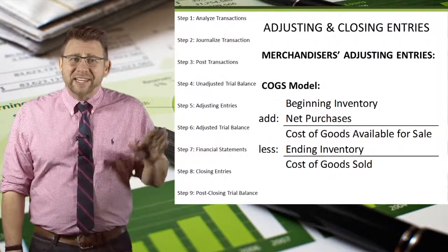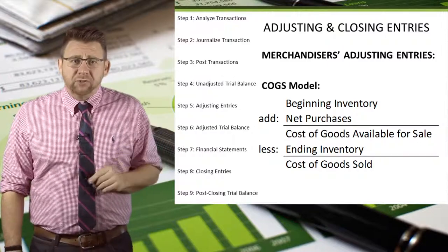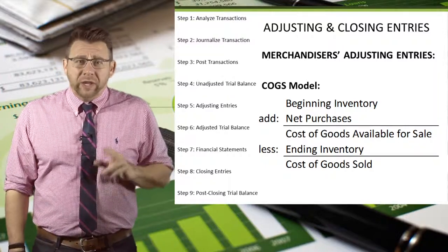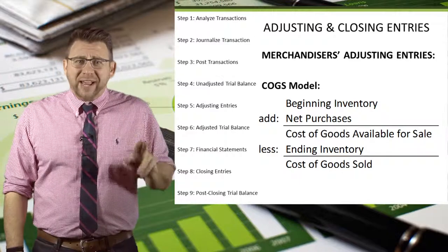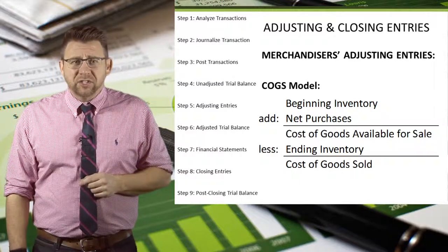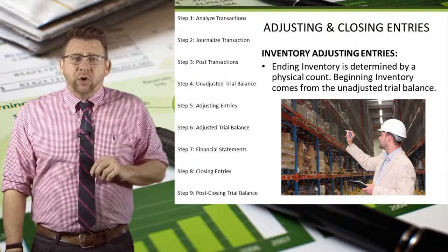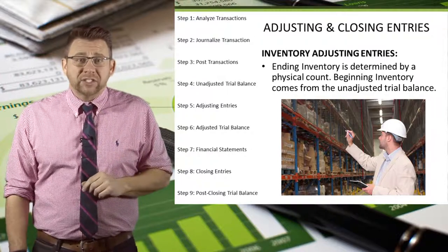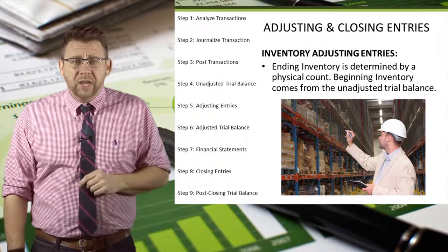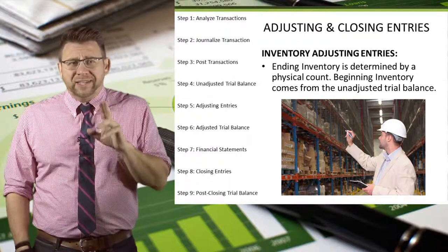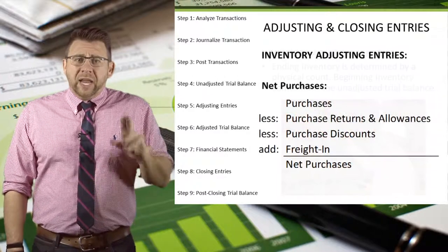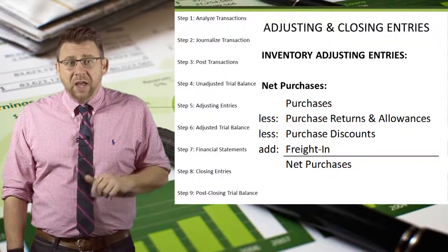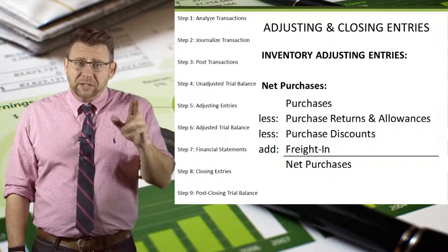The cost of goods sold model is beginning inventory plus net purchases, which equals the cost of goods available for sale — representing all the inventory that we could sell. From that we subtract ending inventory to arrive at cost of goods sold. Ending inventory is determined by a physical count of inventory, done each time ending inventory is adjusted and cost of goods sold is recorded. Beginning inventory is the prior period's ending inventory. Net purchases are calculated by taking purchases minus purchase returns and allowances, minus purchase discounts, plus freight in.